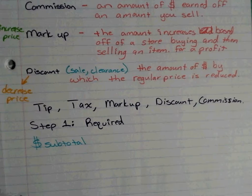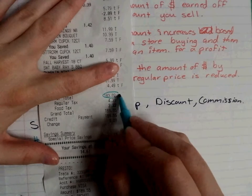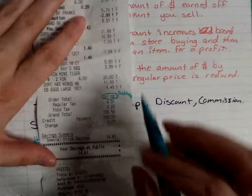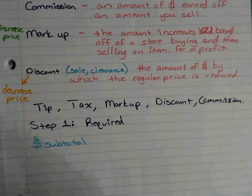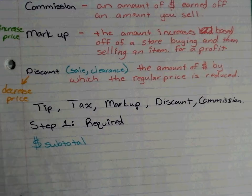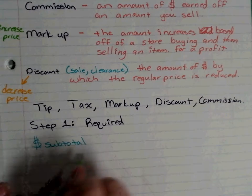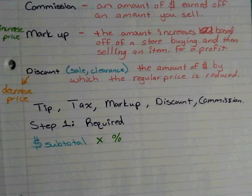The subtotal is the total without the tax — like before on the receipt where it showed the order total. That's all of the food and items added together. So I buy my oranges, beans, noodles — everything rung up on the conveyor belt — that's the subtotal.